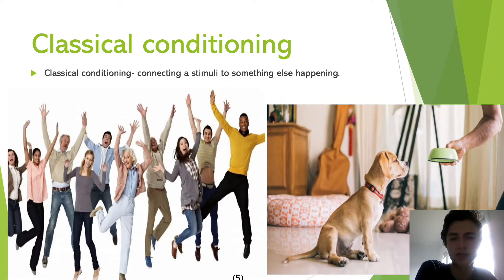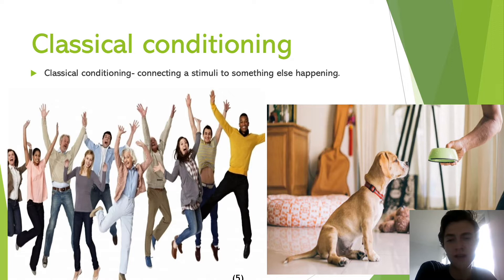Classical conditioning is where an individual connects stimuli to something else happening. For example, this dog here will connect that bowl to receiving food. In the context of a classroom, you can be a positive, happy teacher and then students will connect your classroom to a happy place where they can be themselves and learn.